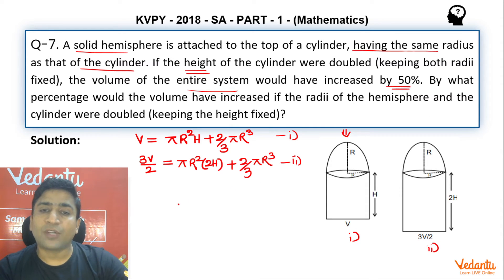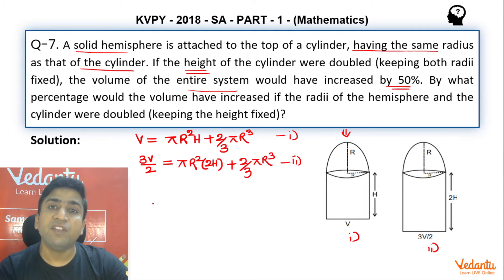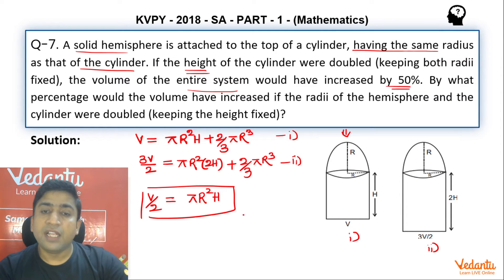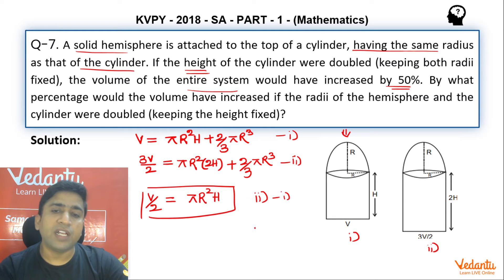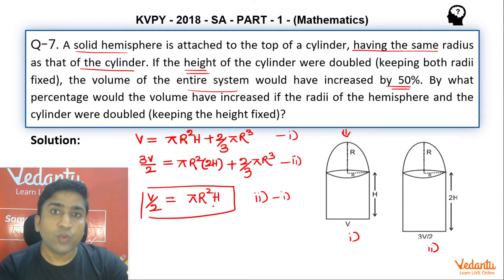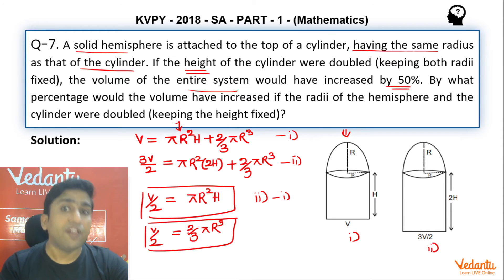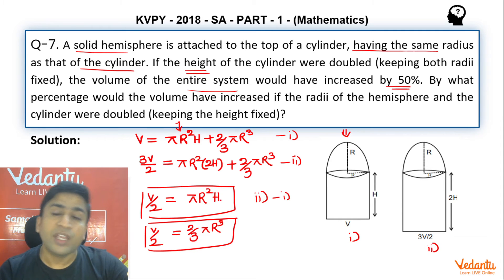Now I'm going to subtract equation 1 from equation 2. The left-hand side gives (3V/2) − V = V/2. On the right-hand side, the (2/3)πr³ terms cancel, and we get πr²h. So πr²h = V/2. From this and the original volume equation V = πr²h + (2/3)πr³, substituting πr²h = V/2 gives us (2/3)πr³ = V/2 as well. So both πr²h and (2/3)πr³ equal V/2 — these are our two key relations.